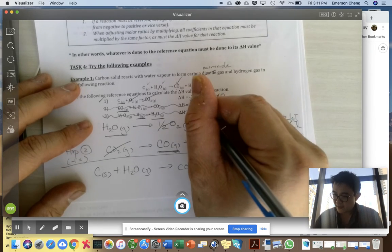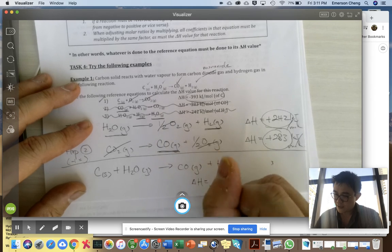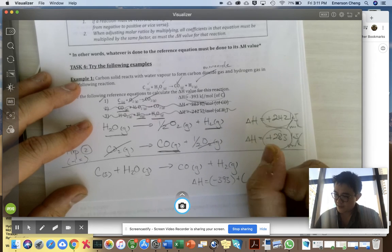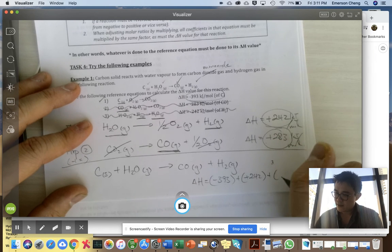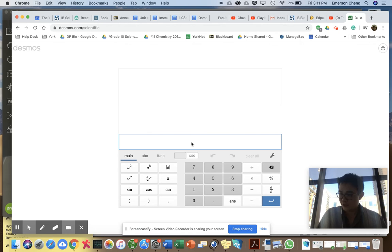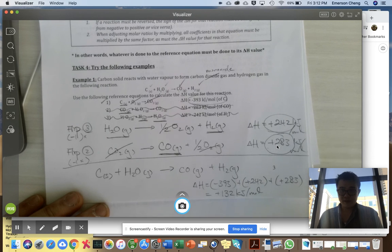Now what you need to do is you need to add this plus this plus this. So delta H for this new equation now will be minus 393 plus positive 283 plus positive 242. Let's use an online calculator. Minus 393 plus 283 plus 242. And look, your answer is positive 132 kilojoules per mole.